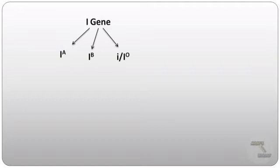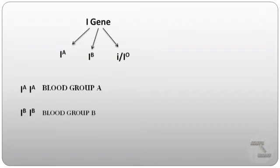One dominant allele of this gene is Iᴬ, which produces antigen A, giving rise to blood group A. Another dominant allele of gene I is Iᴮ, which produces antigen B, responsible for blood group B. The third allele is the recessive i (or Iᵒ), which gives rise to blood group O only in the homozygous condition. If allele Iᴬ is present in the homozygous condition — meaning IᴬIᴬ — it will give rise to blood group A.